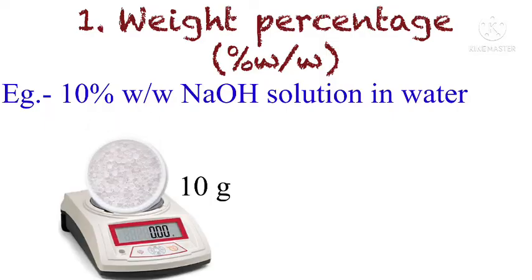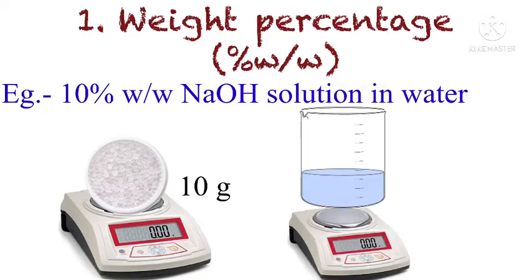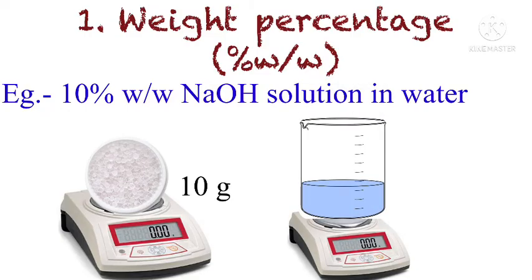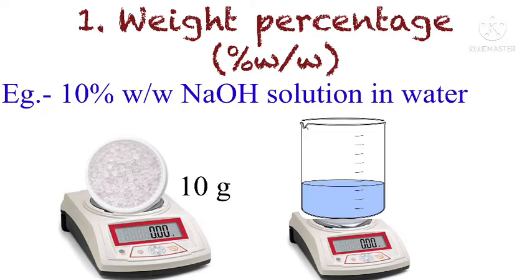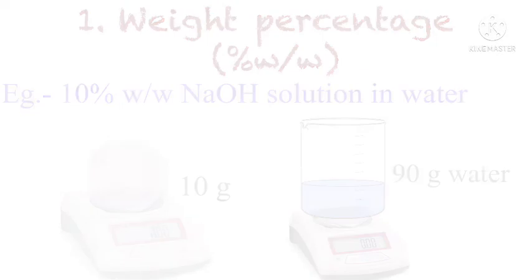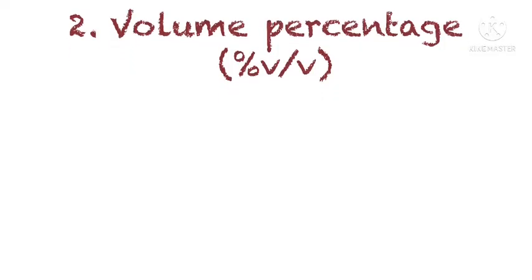For example, to prepare a 10% w/w sodium hydroxide solution in water, we first weigh 10 grams of sodium hydroxide. A common point of confusion is how much water to use — should it be 90 grams or 100 grams? In % w/w, the solute and solvent together must equal 100 grams, so we take 90 grams of water to make 100 grams of solution.